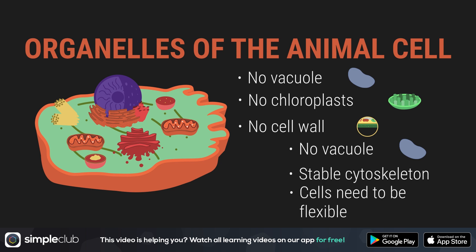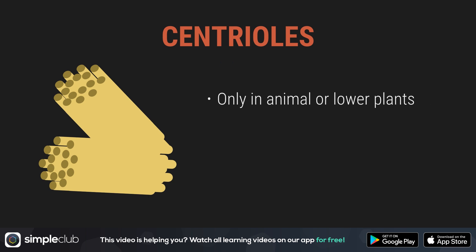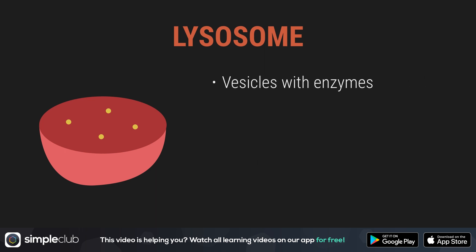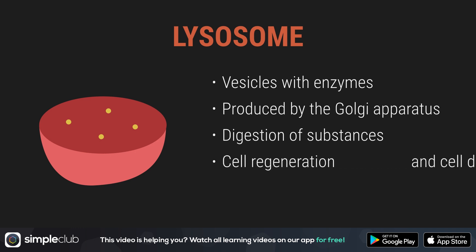The animal cell also has some special things, just like the plant cell. There are centrioles in every animal cell, but they're only found in plant cells of the lower plants like algae, mosses, ferns, and so on — other plant cells do not have them. Centrioles consist of little tubes called microtubules and fulfill different transport and support functions. They do a lot of work during mitosis and meiosis when they pull half of the genome to each side of the cell. Then there are the lysosomes — small vesicles filled with enzymes produced by the Golgi apparatus. It's their job to digest certain substances and parts of the cell or recycle them if possible. They also play a huge part during cell regeneration and cell death, since their membrane dissolves and the enzymes then eat the cell up entirely.